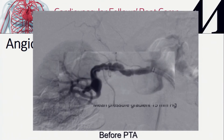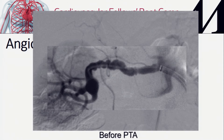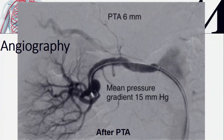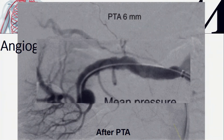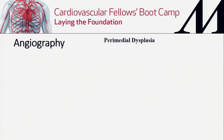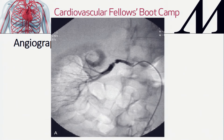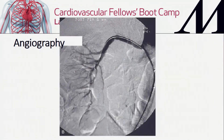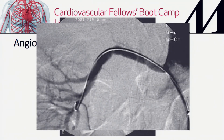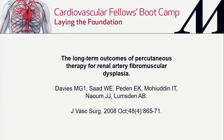For endovascular treatment: in the case shown earlier with a 15 mmHg pressure gradient, balloon angioplasty was performed for medial fibrodysplasia — the result was smooth with the gradient dropping to 6 mmHg. A perimedial case was also dilated with excellent results. Unlike atherosclerotic disease where balloon angioplasty tends not to last, for FMD generally avoid stents — these patients are young and if a stent thromboses and causes renal loss, reoperation becomes very difficult.